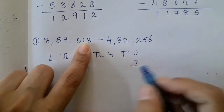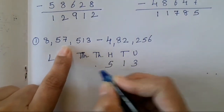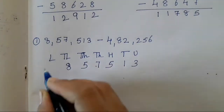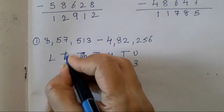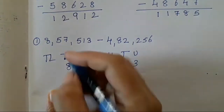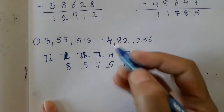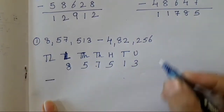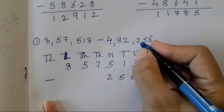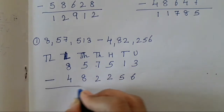Now write the numbers in reverse (ULTA) pattern. 3, 1, 5, 7, 5, 8 — lakhs will come over here and 10 lakhs will come over here. So 10 lakhs we have to keep it empty. Add your subtraction sign. Then: 6, 5, 2, 2, 8, 4.